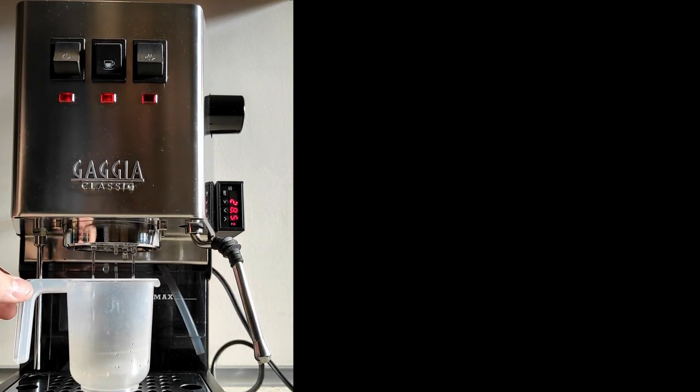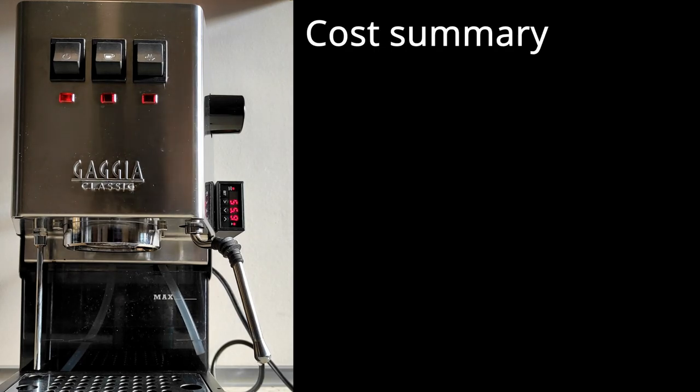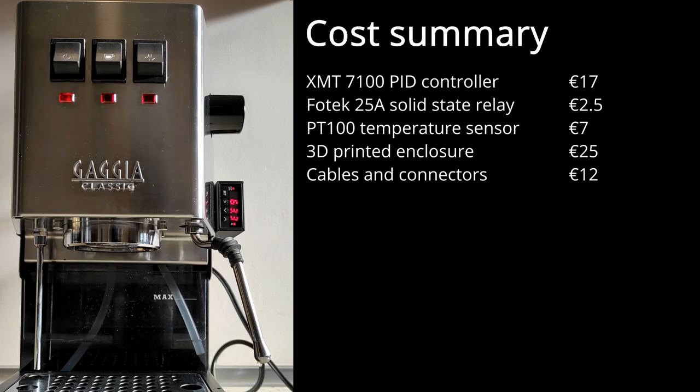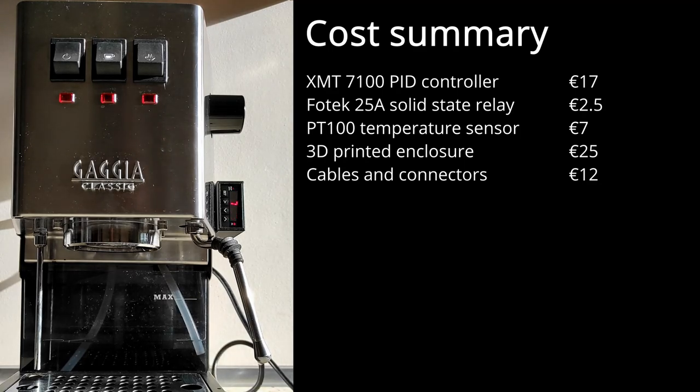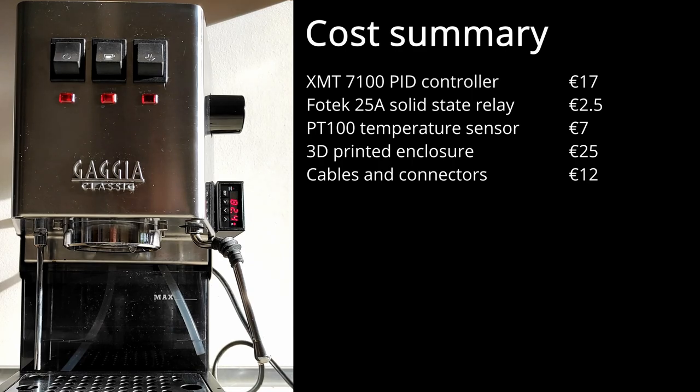Here I am turning the machine on for the first time after installing the PID controller. I was half expecting the need for some tweaks or initial problems with the boot, but it went smoothly right from the start. As the machine is heating up, let me go through the cost summary. The PID controller XMT7100 cost the equivalent of 17 euro or 21 US dollars. The solid-state relay branded FOTEK and rated for 25 amps cost the equivalent of 2.5 euro or 3 US dollars. PT100 high-precision temperature sensor cost the equivalent of 7 euro or 8.5 dollars. The enclosure which I had 3D printed locally cost 25 euro or 31 dollars and is actually the most expensive part of this mod.